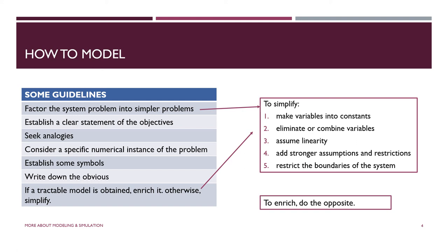Make assumptions. That will simplify things tremendously. That's what people do with models. Make restrictions. And then finally, restrict the boundaries of the system, the scope of the system, so that you have a smaller universe to work with, because you can always spread it out and make it more universal later on.